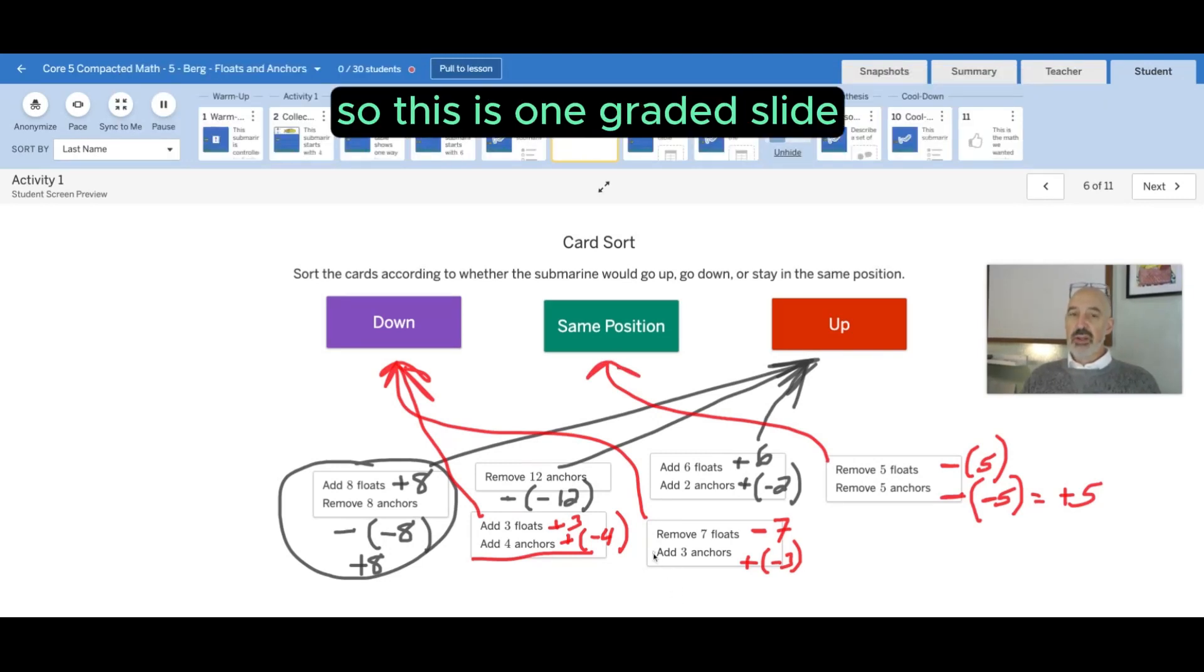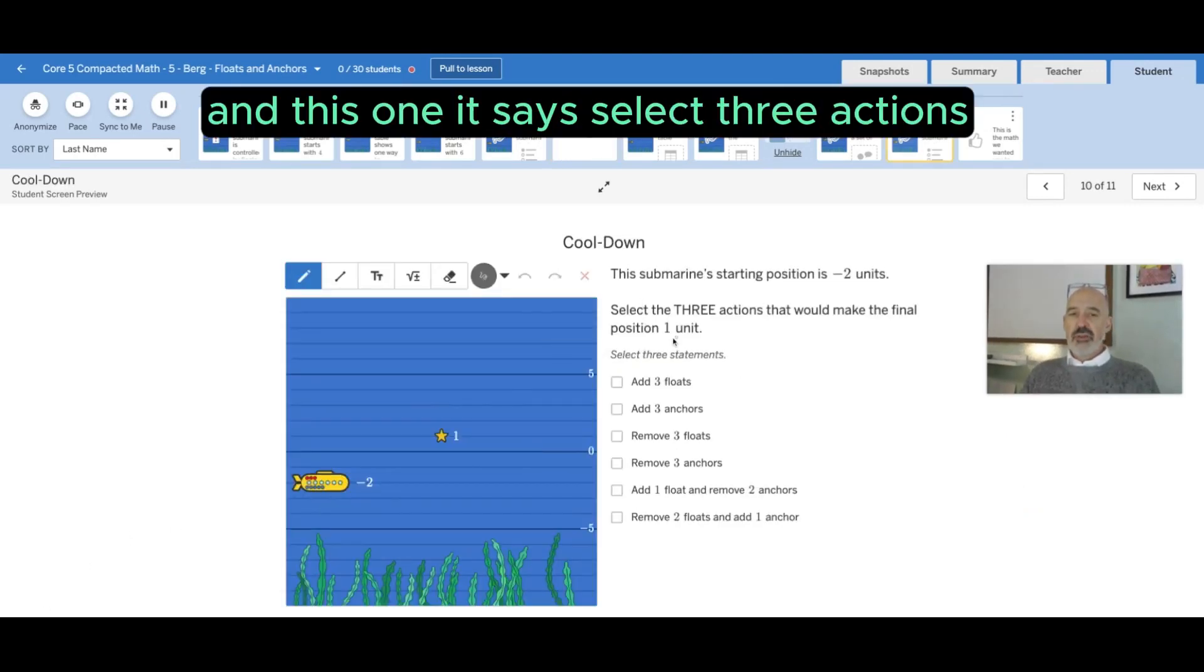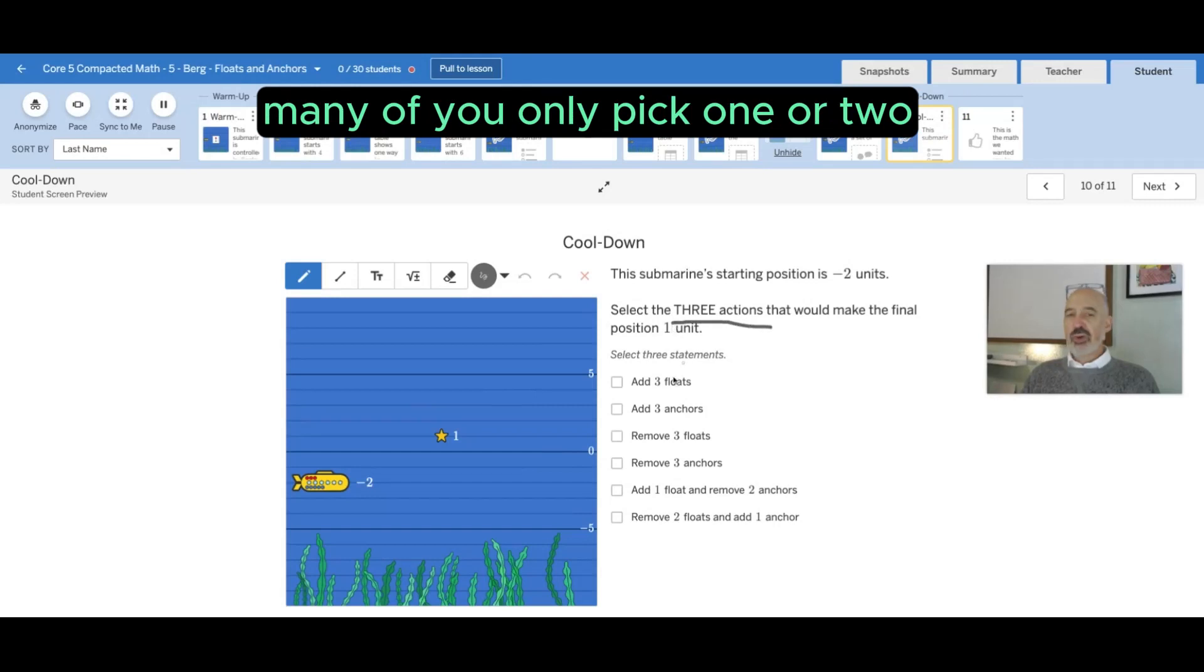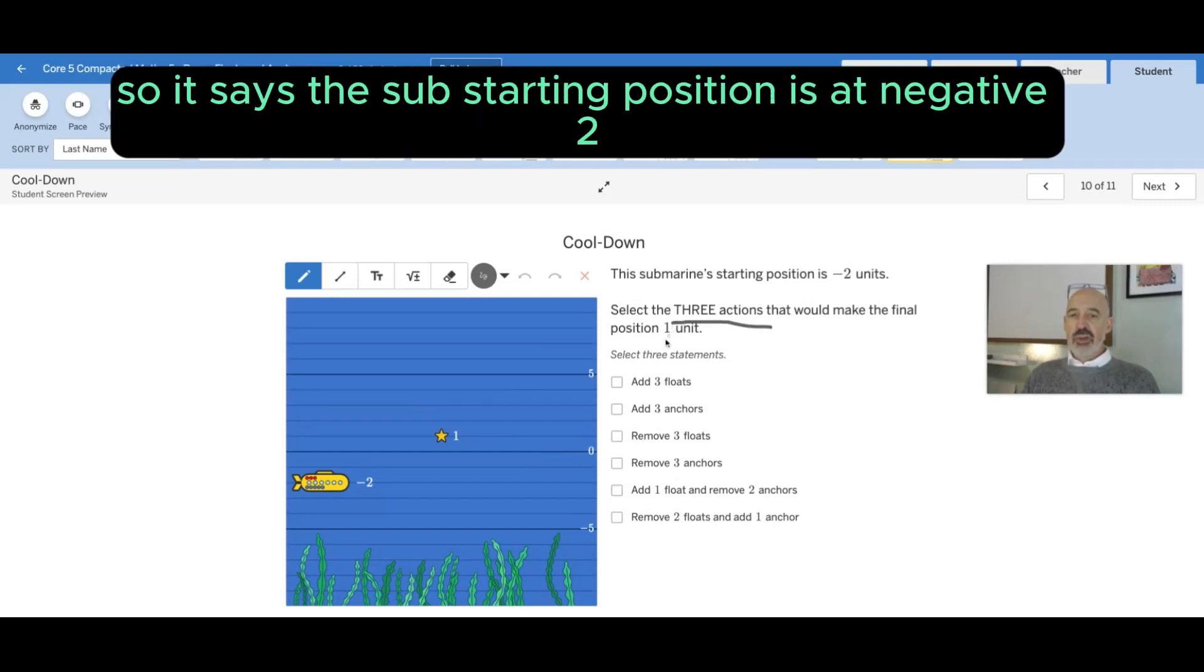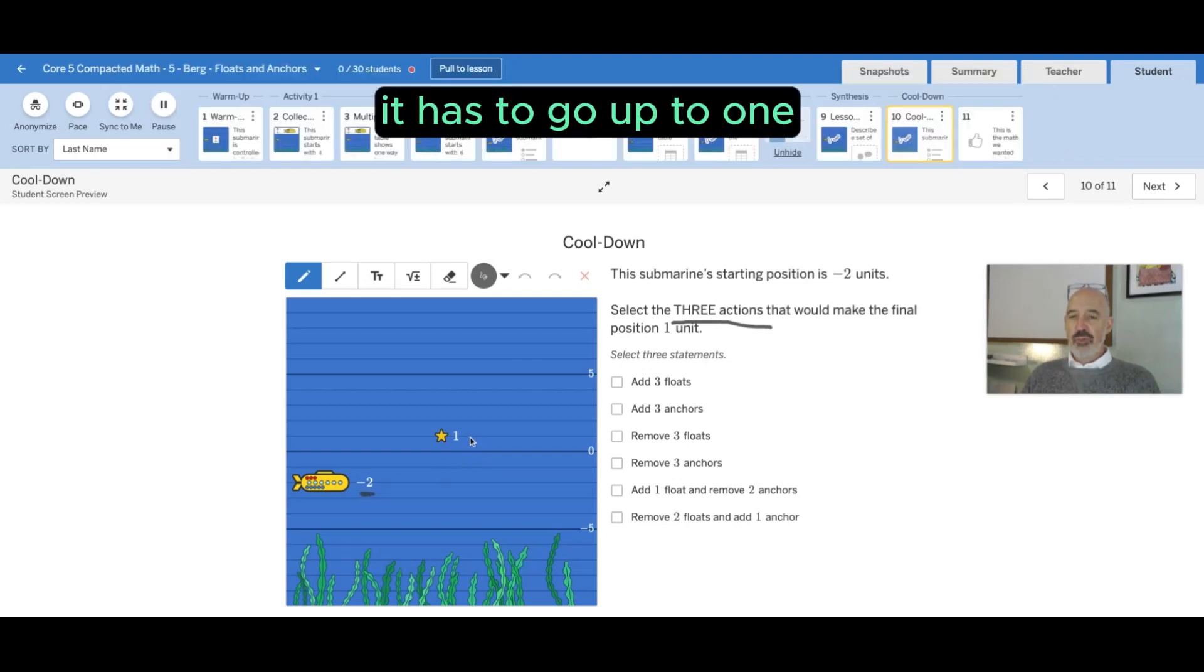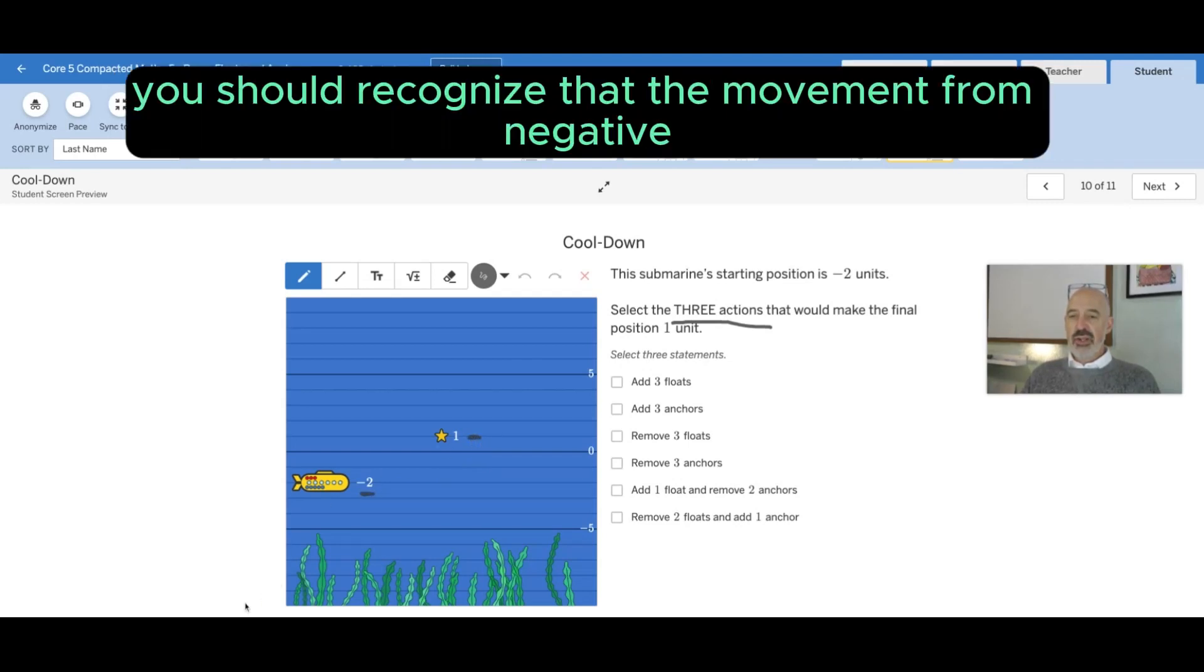So this is one graded slide. The other one is the cool down slide, and this one says select three actions. Many of you only picked one or two, that's why you got it wrong. So it says the starting position is at negative two.